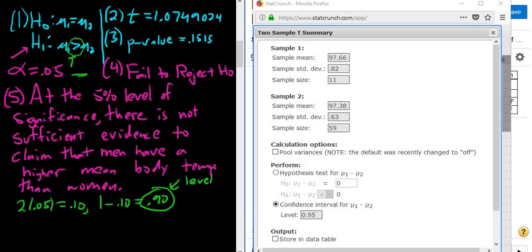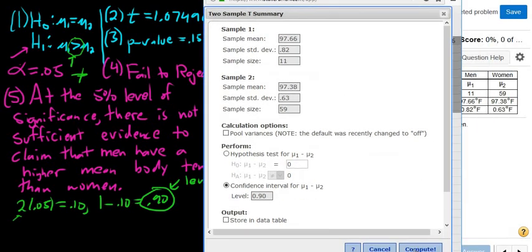If it's not equal to, it would just be 1 minus alpha. So it would be 0.95. Whenever it's less than or greater than, though, you first have to multiply it by 2 and then do that. So this is going to be our level here. So compute.